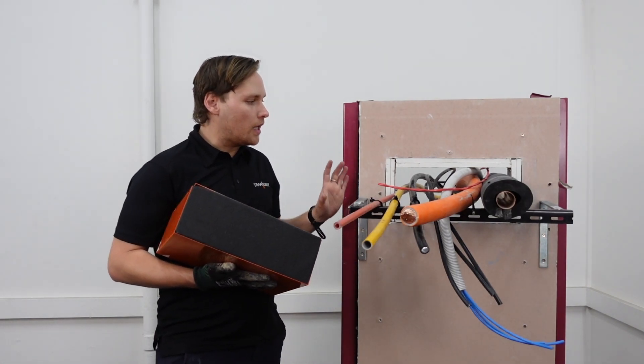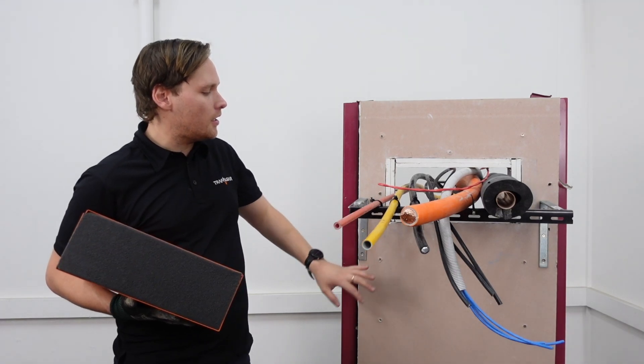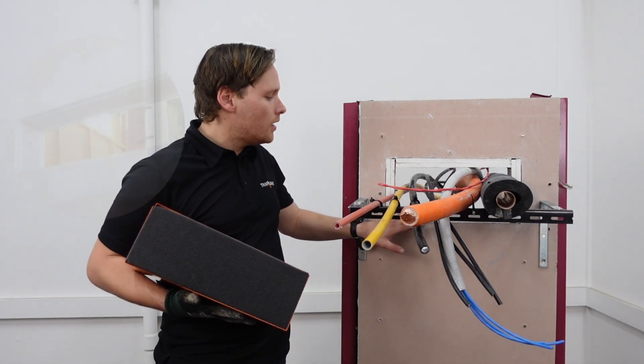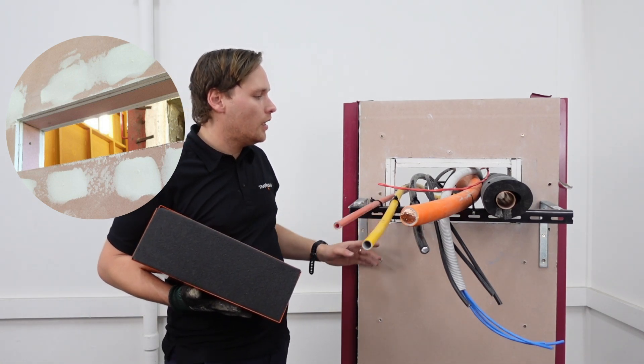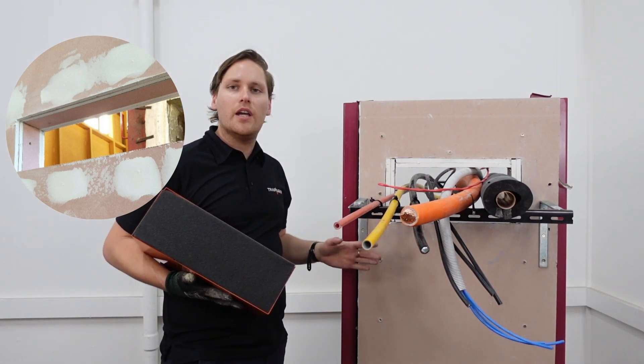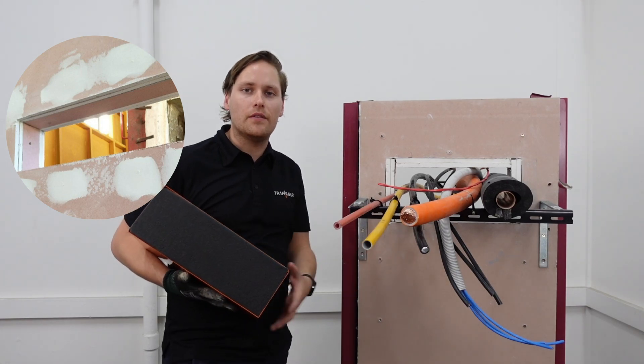When you're dealing with a plasterboard wall or a wall that has a cavity, most of the time you're going to need to follow the wall manufacturer's details to frame and line out the aperture. So that's what we've done here. We've used strips of plasterboard and stud to frame around the penetration. That way we're not going to allow fire to get into the cavity of the wall.